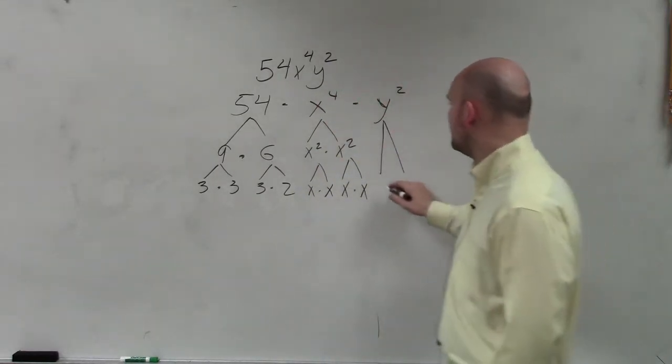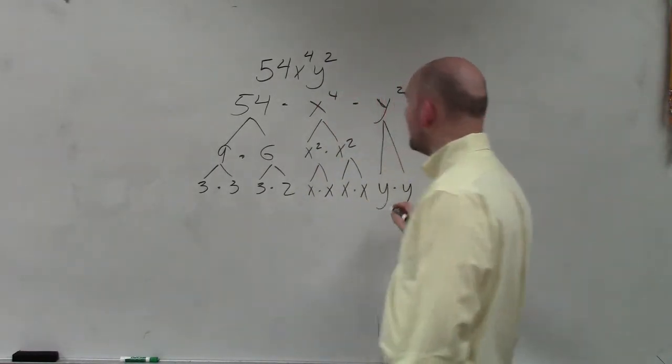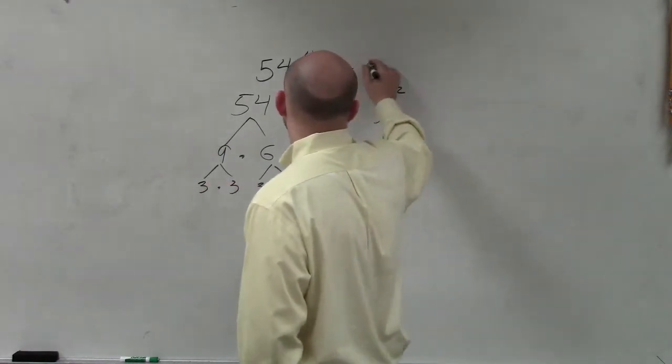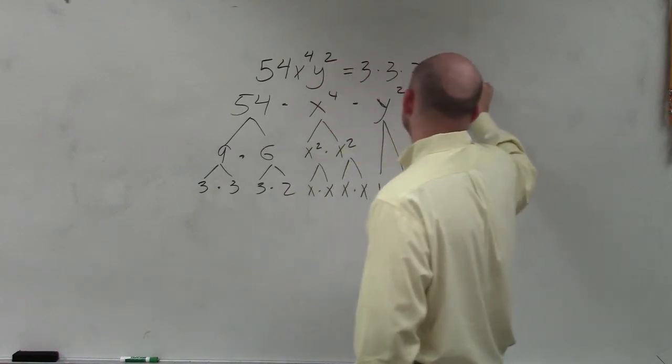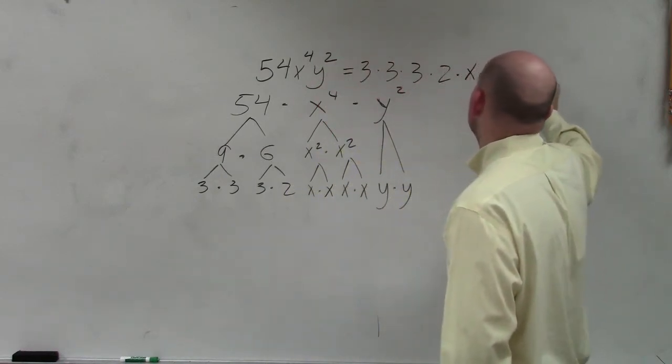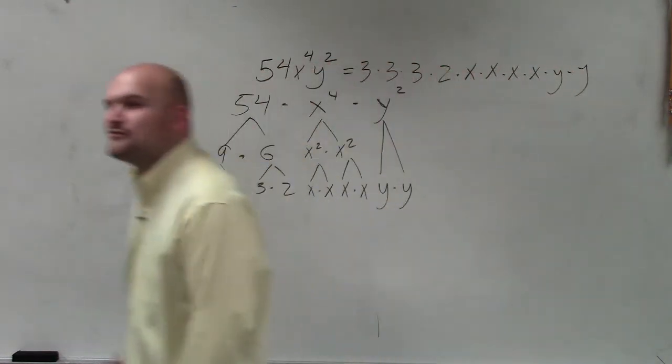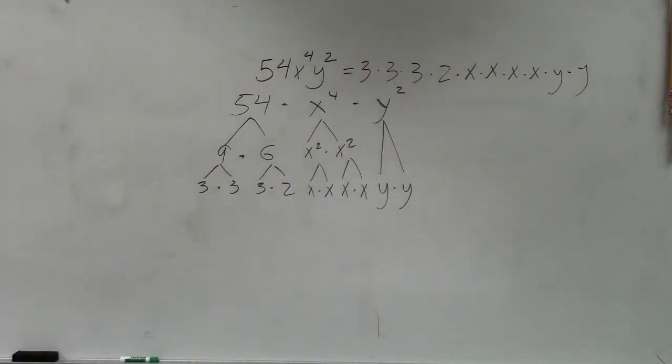Then y squared, I can break down into y times y. So therefore, if I write this as a product as 3 times 3 times 3 times 2 times x times x times x times y times y, that is your linear factorization. It is the number written as a product.